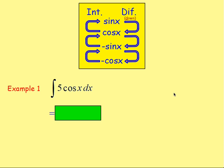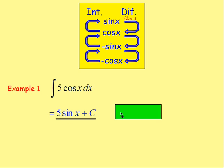Bearing that in mind, let's try a few examples. Example 1: integrate 5cos(x). Well, the 5 will just stay as it is. Integrating cos(x) — using the diagram: sine, cos, negative sine, negative cos — integrate cos and you go up, which takes you back to sine. So we'd have 5sin(x) plus C.